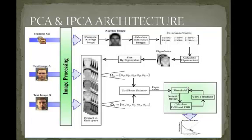As we know, the human visual system is capable of continuous training as well as testing at any instant. Similarly, we can incorporate this with the help of incremental PCA. When a new image is given as input, that image is added into the database for further analysis. The cache will be updated using the factor alpha, which lies between 0 and 1.